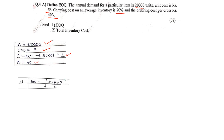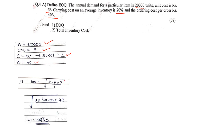EOQ = square root of (2 into A into O divided by C). A = 20,000, O = 40, C = 1 rupee. So: square root of (2 into 20,000 into 40 divided by 1). Whatever value you get, press the square root button — the EOQ comes to 1265 units (rounded up to 1265 since units cannot be in decimals).